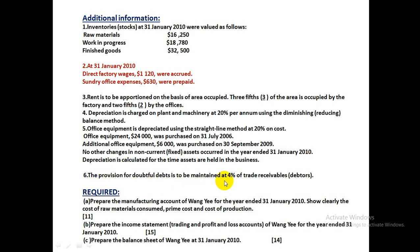Provision for Doubtful Debt is 4% — a detailed calculation will also be shown. We are required to prepare all three statements: the Manufacturing Account, Income Statement, and Balance Sheet for Wang Yi.